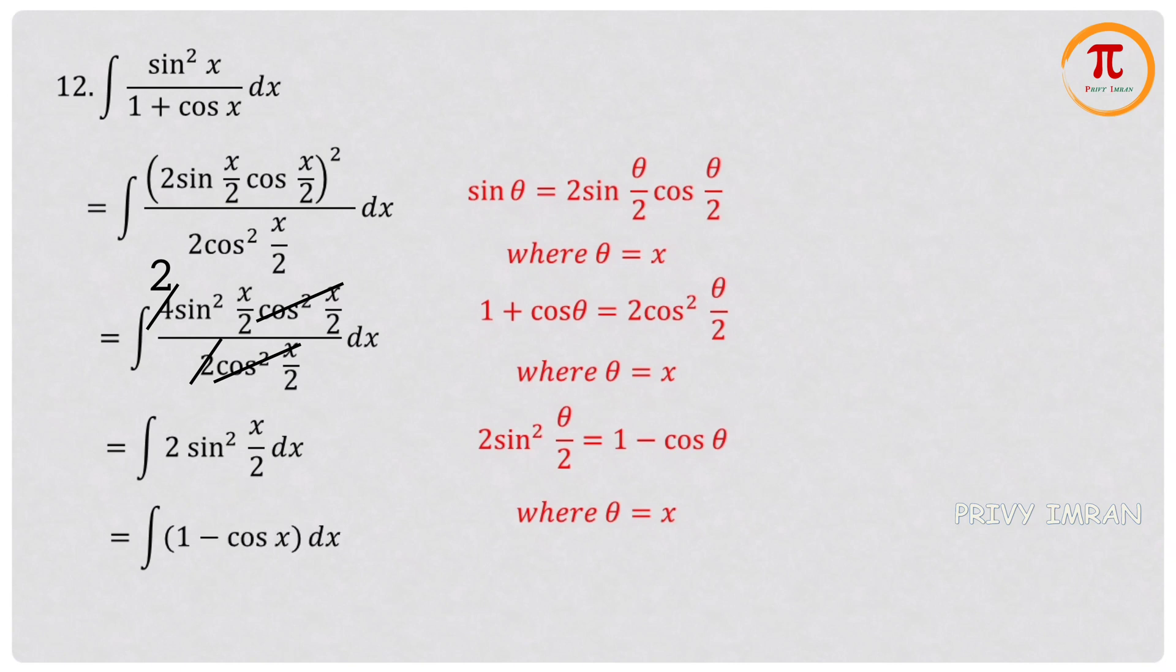Let me consider: integration of 1 dx equals x plus c. Now my first term can be written as x. And again, let me consider: integration of cos(ax) dx equals sin(ax) divided by a plus c, where a equals 1. Hence my second term can be written as minus sin x plus c. Hence my final answer is x minus sin x plus c.